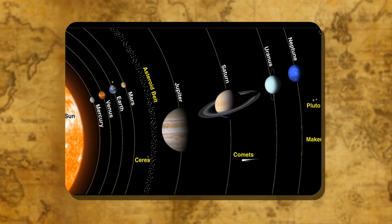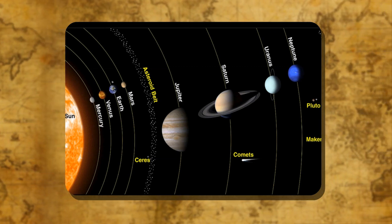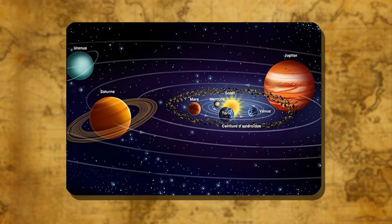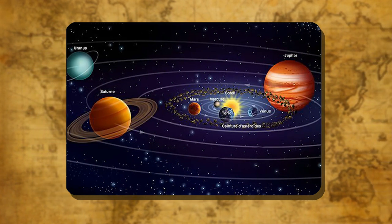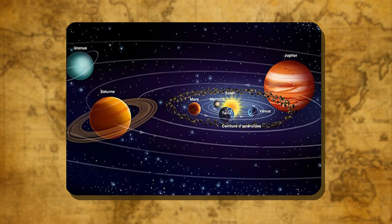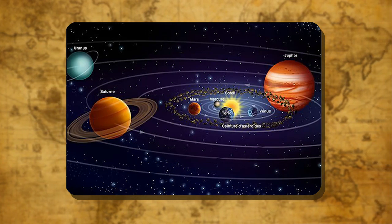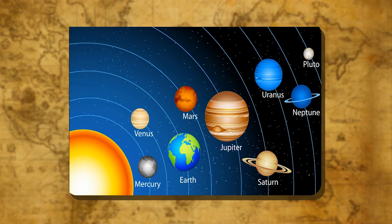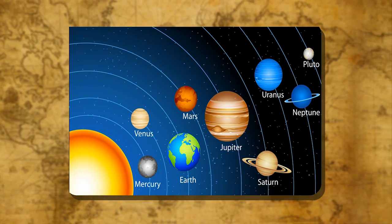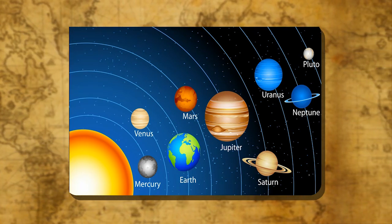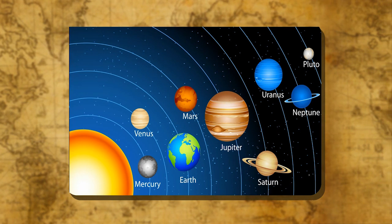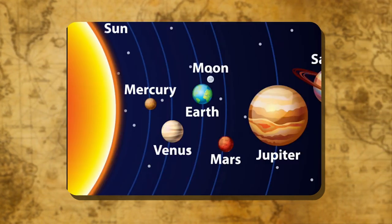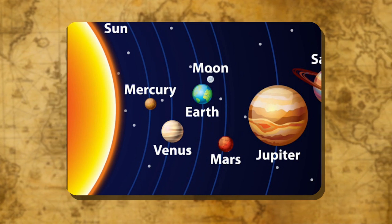Some celestial bodies have no light of their own. They are lit by the light of the stars. Such bodies are called planets. The word 'planet' comes from the Greek word meaning 'wanderers,' but the planets do not wander just in any direction in space. Each has its own fixed path, orbit, and period of revolution. The Earth on which we live is also a planet.